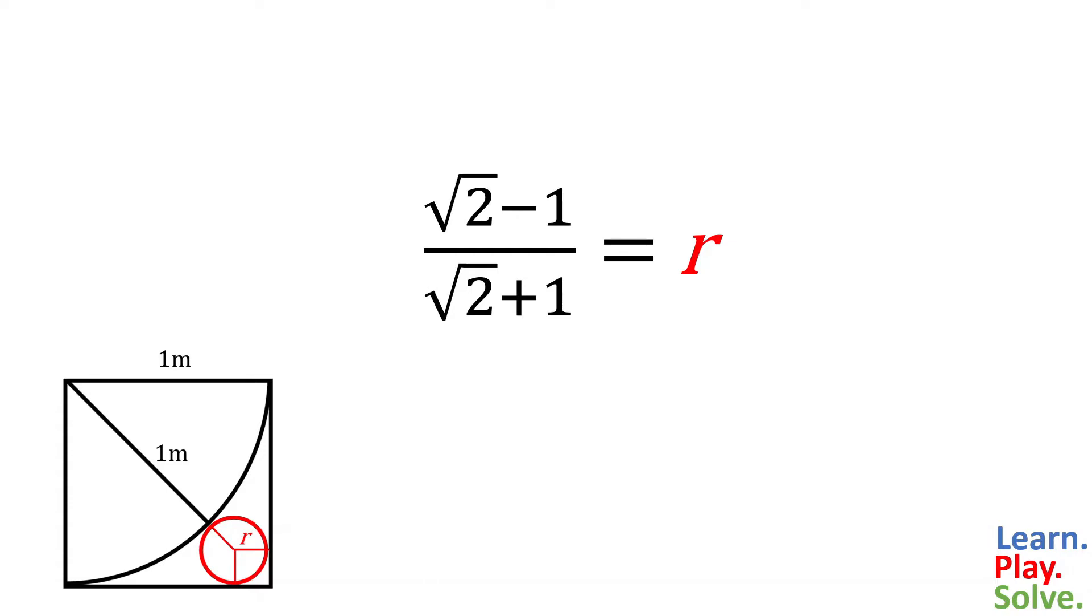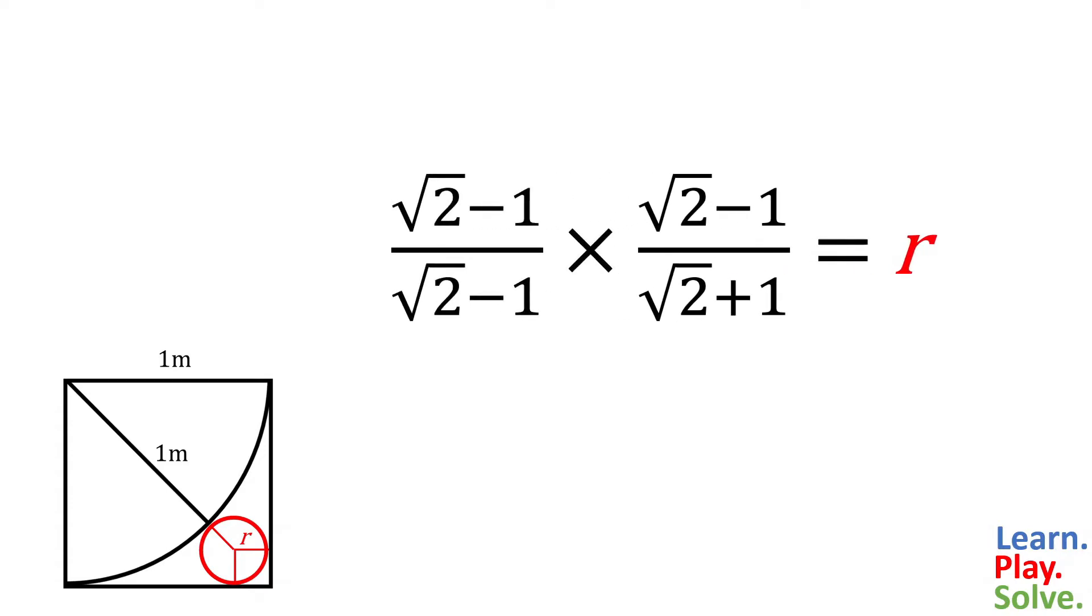Multiply the top and bottom of this fraction by the conjugate of the denominator, root 2 minus 1. That's the same expression as the numerator, so we can write that as root 2 minus 1 squared.